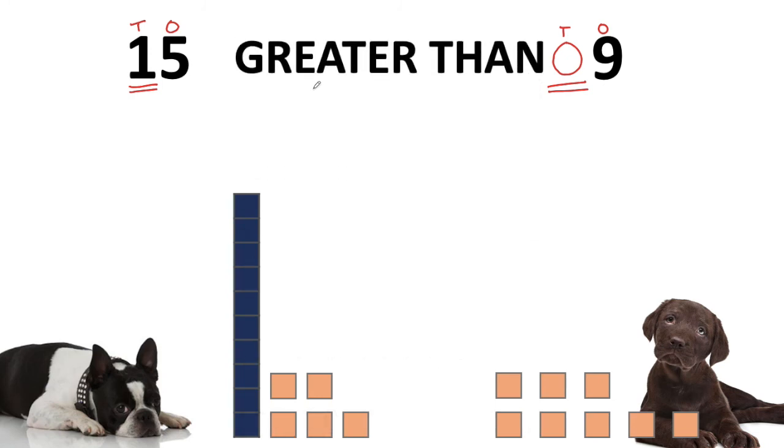We know 15 is greater than 9 because 15 has one group of ten and 9 doesn't have any—it's just nine single ones.